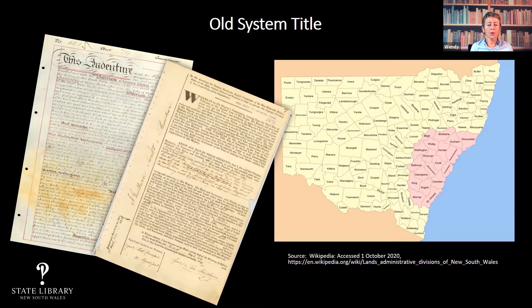You won't find privately transacted land for those other states in the general register of deeds. You will find them in the indexes, but when you look for those deeds in the general register, you'll find that they have been extracted and presumably sent to the appropriate authorities in those other states.